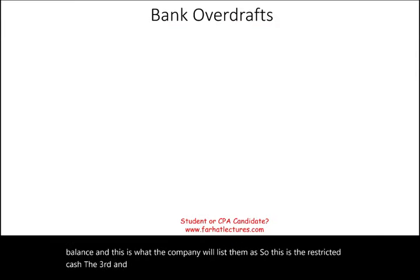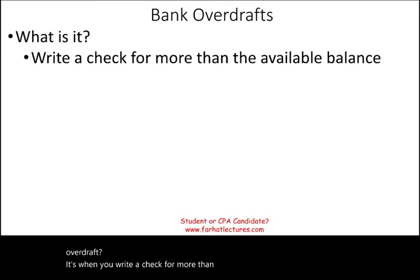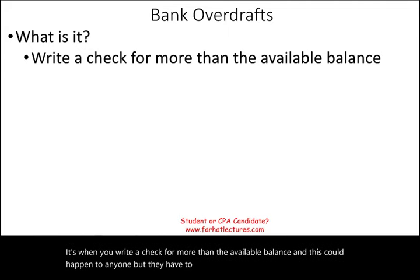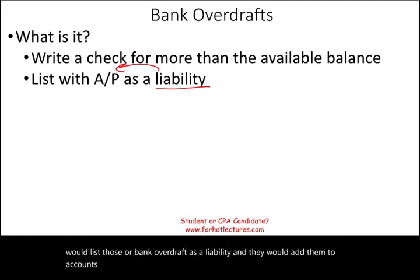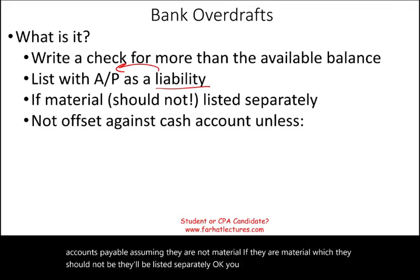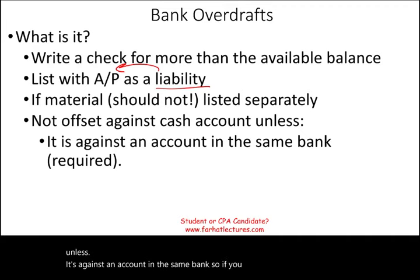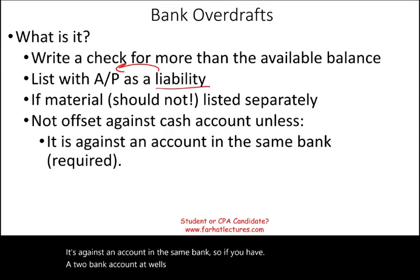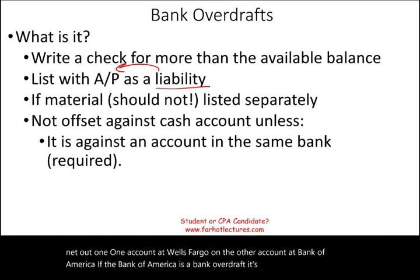The third component is bank overdraft, which occurs when you write a check for more than the available balance. Companies list bank overdrafts as a liability, typically added to accounts payable if not material, or listed separately if material. You cannot offset cash accounts against overdrafts unless both accounts are at the same bank. For example, if you have two accounts at Wells Fargo — one positive and one with an overdraft — you can net them out. But you cannot net a Wells Fargo account against a Bank of America overdraft; the Bank of America overdraft must be listed separately.